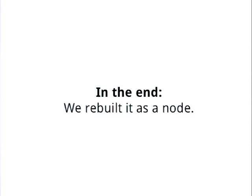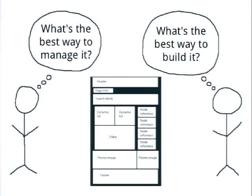We should be presenting them our plan and defending it before we build it, so that it's a lot easier to change things and change our minds. This was a small misunderstanding and in the end we fixed it, but it was another example of how we were just thinking different things. We were thinking how to build it; they were thinking what's the best way to manage it. We just didn't consider how our approach was going to affect them.